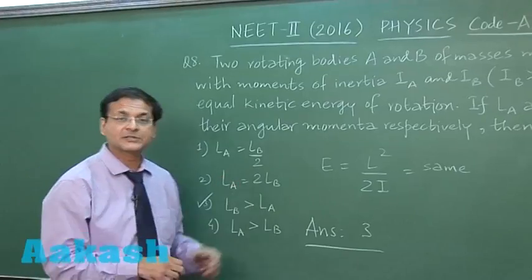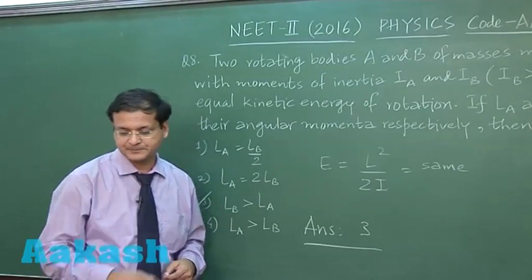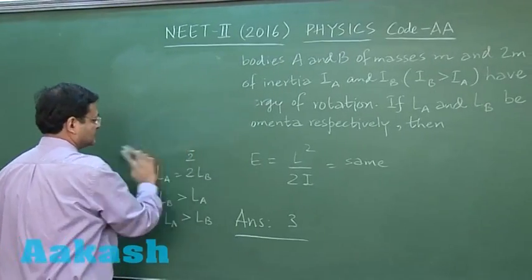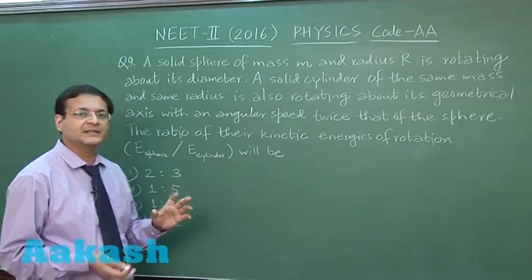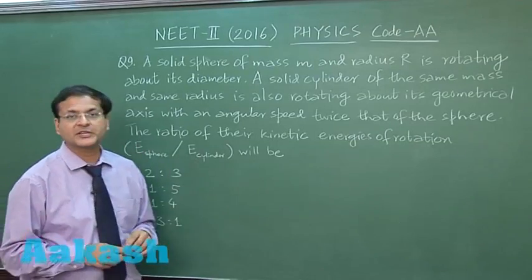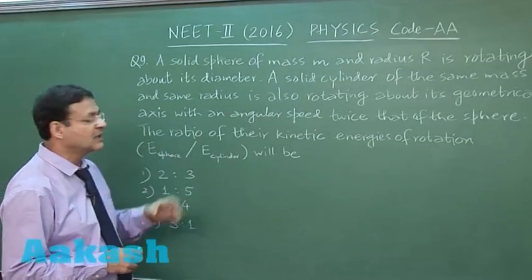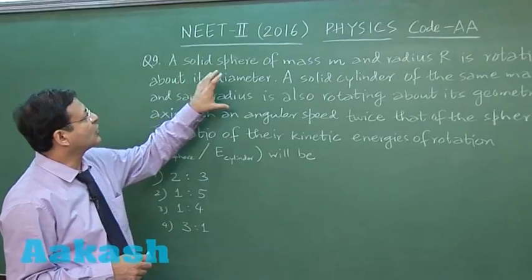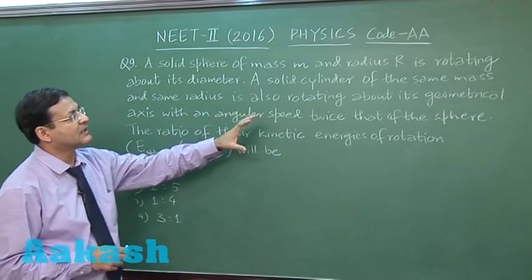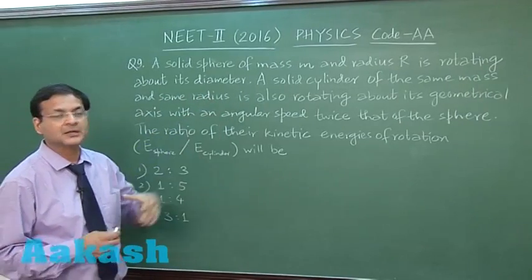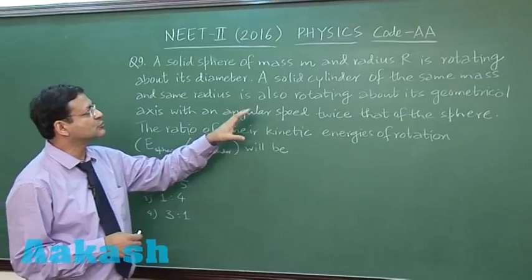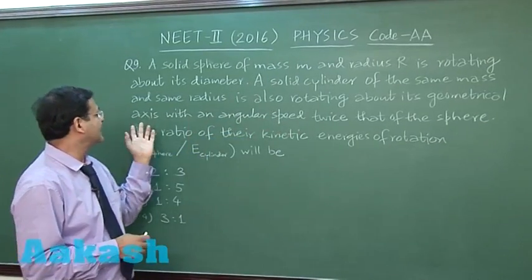Now let us switch over to question 9. Once again this question 9 is based on rotational motion. Here you have to compare the rotational kinetic energy of sphere and cylinder. It says that a solid sphere of mass m and radius r is rotating about its diameter, and a solid cylinder of the same mass and same radius is also rotating about its geometric axis.